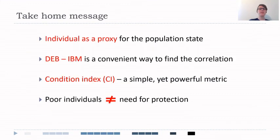So at the end, I would like to leave you with some take-home messages. First, individuals can be used as a proxy for the population state. However, some limitations need to be taken into consideration. The DEB-IBM approach is a really convenient way if we want to find a correlation between the traits of the individual and the population dynamics. Also, condition index is a really simple but powerful metric that should be considered when making decisions in wildlife management.